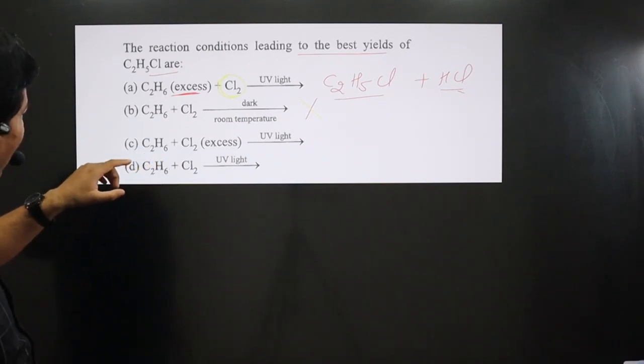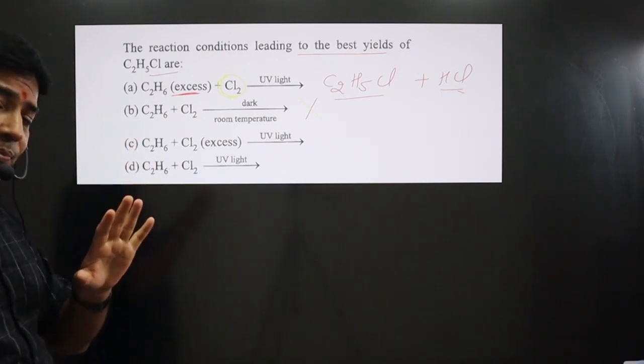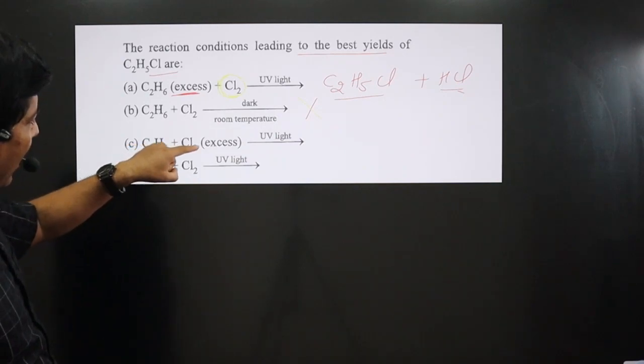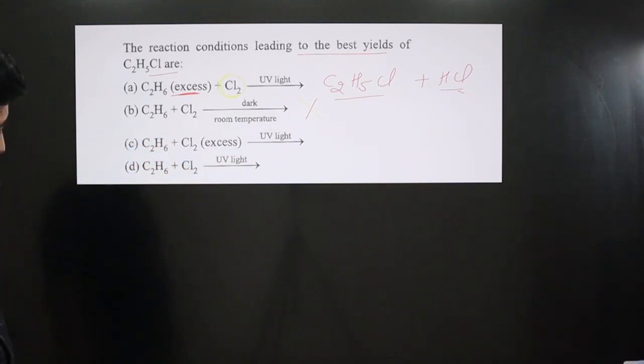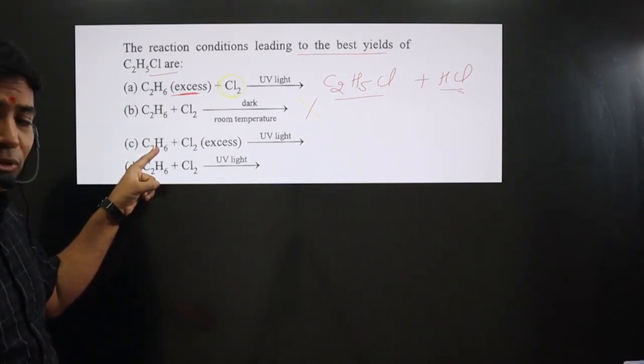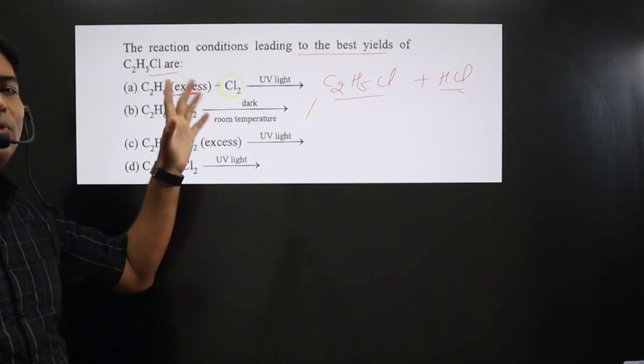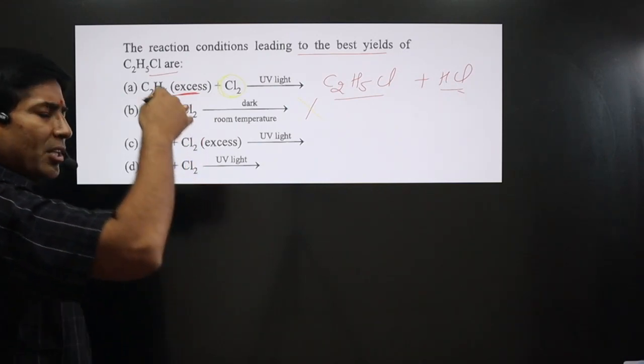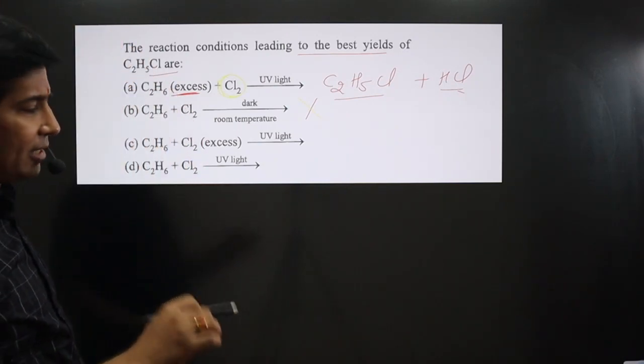Next, we have C2H6, ethane, and Cl2 is given in excess quantity. So when Cl2 is given in excess quantity, whatever number of hydrogens are present here, all the hydrogens will be removed. Since whatever quantity of Cl2 you need, you can take it.